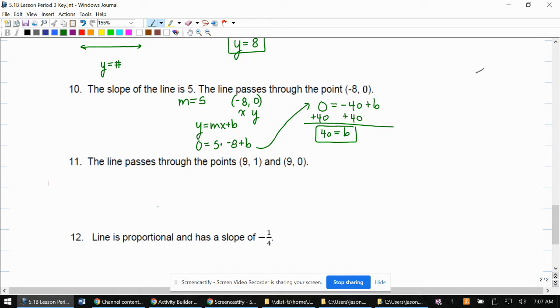After we do that, we need to build our equation, and our equation is y equals 5x plus 40. We're putting m back in the m spot and b back in the b spot, which is at the very end.